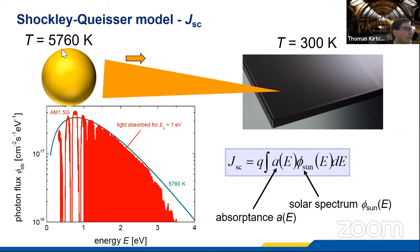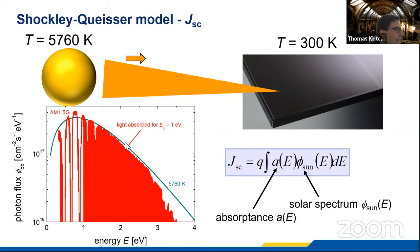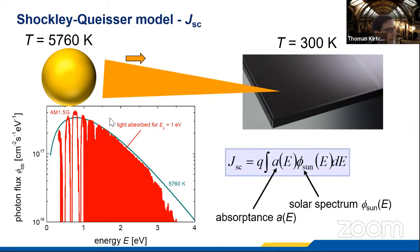Starting with the sun: the sun emits a spectrum relatively similar to the black body spectrum of a body at around 5,760 Kelvin — shown as the cyan or dark green line. The x-axis is photon energy and the y-axis is photon flux per area per time per energy interval. This green line is already the spectrum as seen from earth, at the distance the sun is away, visible only at a very tiny solid angle. The power density that arrives on earth is around one kilowatt per square meter.